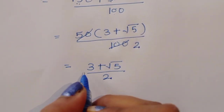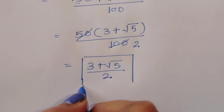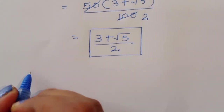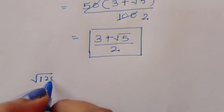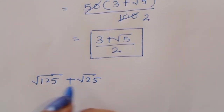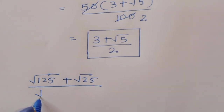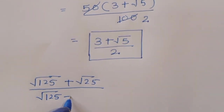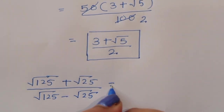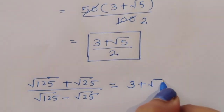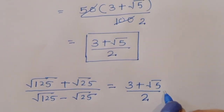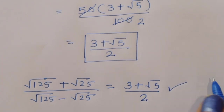We got the solution: 3 plus square root of 5 divided by 2. So square root of 125 plus square root of 25, divided by square root of 125 minus square root of 25, is equal to 3 plus square root of 5 divided by 2. We got the solution using two methods. Thank you.